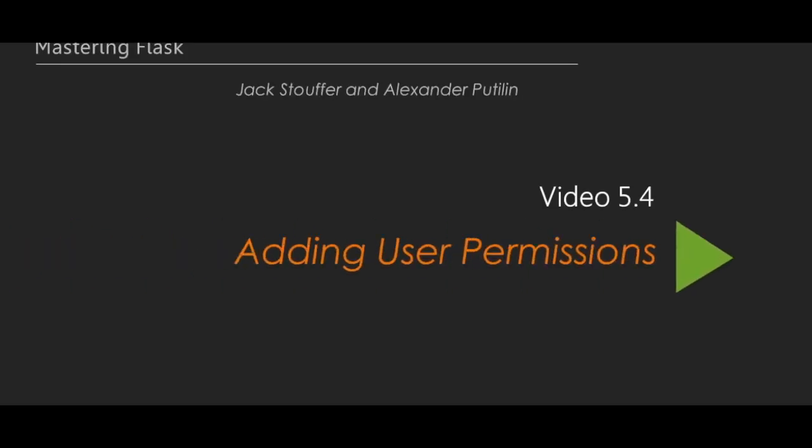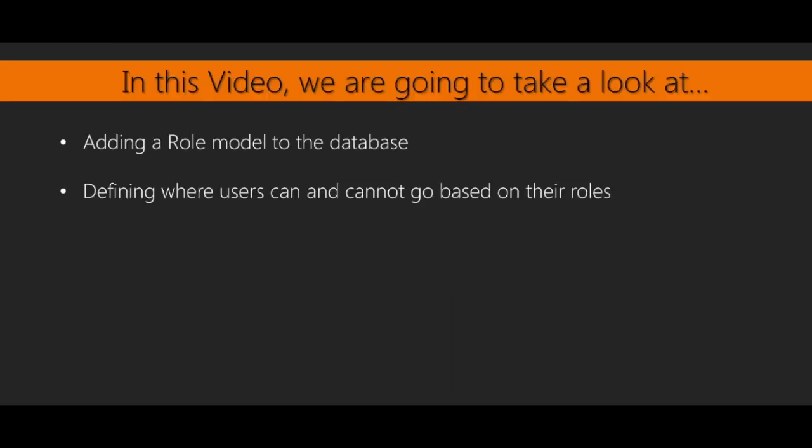This is Video 4 of Section 5, Securing the App, titled Adding User Permissions. In this video, we are going to add functionality to our app that allows us to define where each user can and cannot go. Each user will have an assigned role, and each view will define whether or not certain roles are allowed to access the page. All this functionality will be handled through a new Flask extension called Flask-Principal.